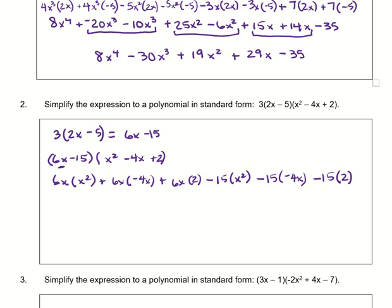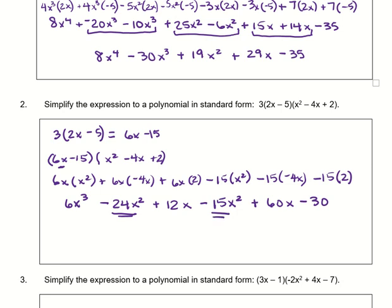Going back to do the multiplication: 6x times x² is 6x³. 6x times negative 4x is minus 24x². 6x times 2 is plus 12x. Minus 15x². Negative 15 times negative 4x is positive 60x. Negative 15 times 2 is negative 30. Combining like terms — negative 24x² and negative 15x², and 12x and 60x — gives 6x³ minus 39x² plus 72x minus 30.